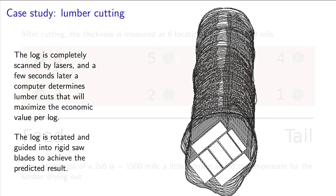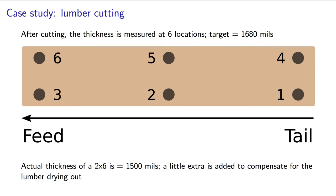The blades cut along that path, and after the board is cut, it is measured for quality control at six positions. The target thickness is 1680 in this example.